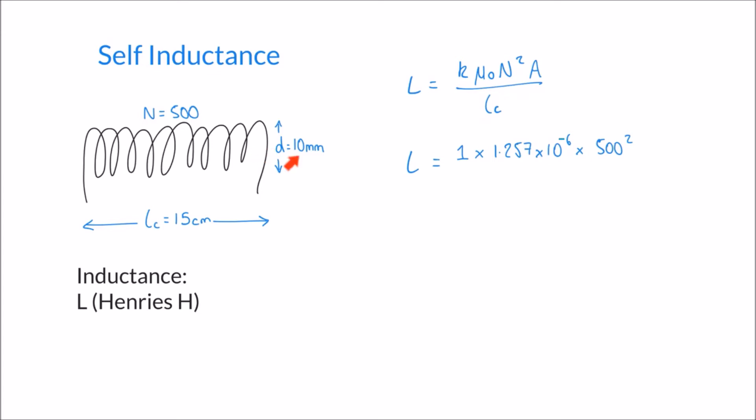10 millimetres is 0.01 metres. We also know that the formula for the area of a circle — which we're assuming this cross-section to be — is pi r squared.